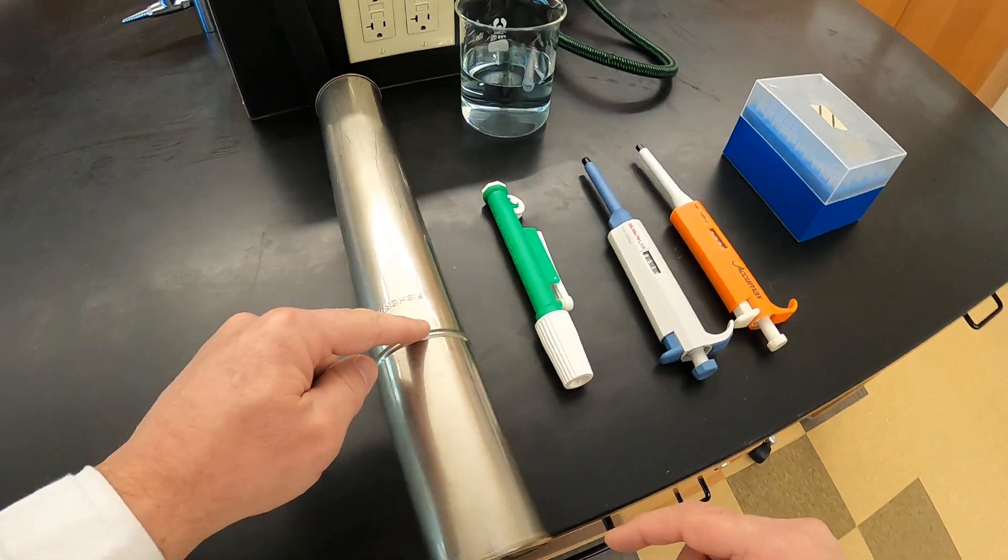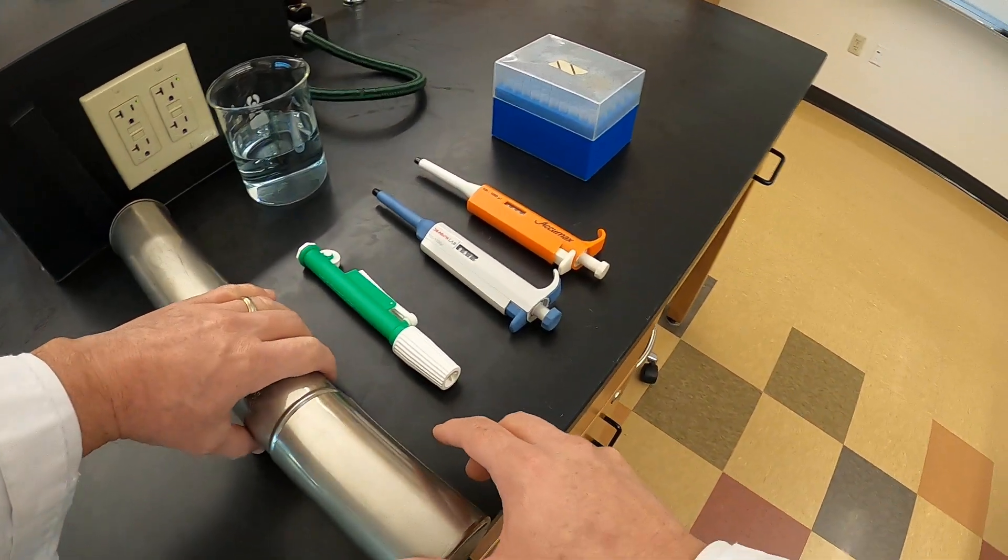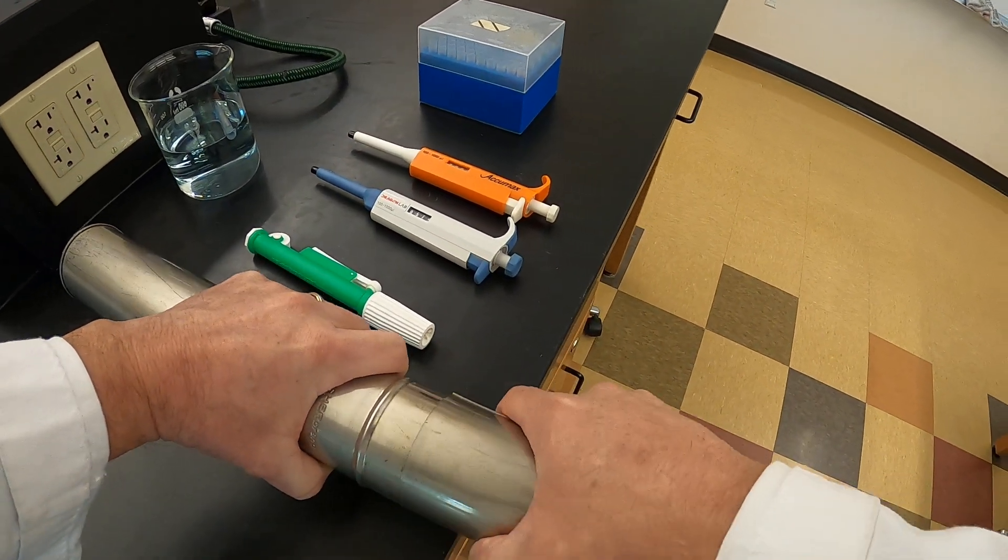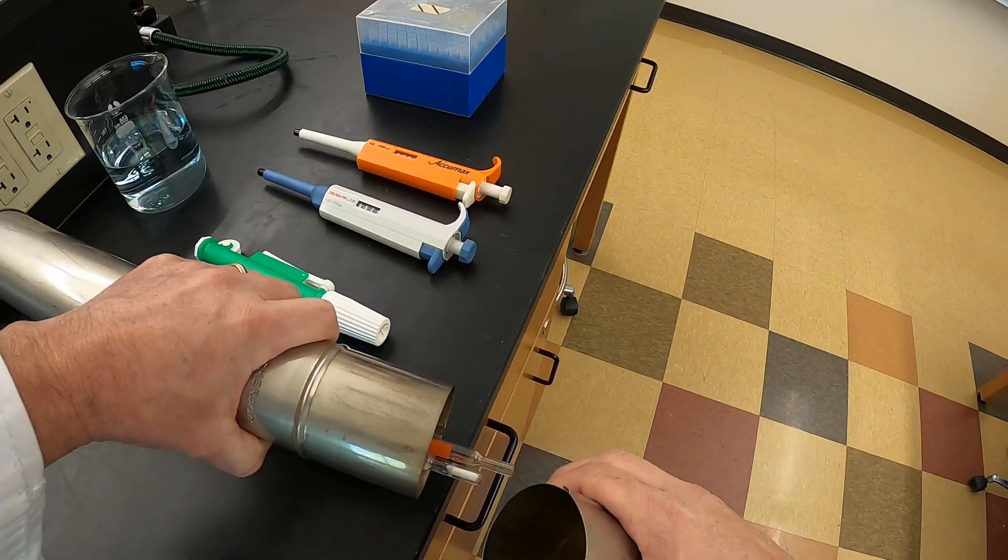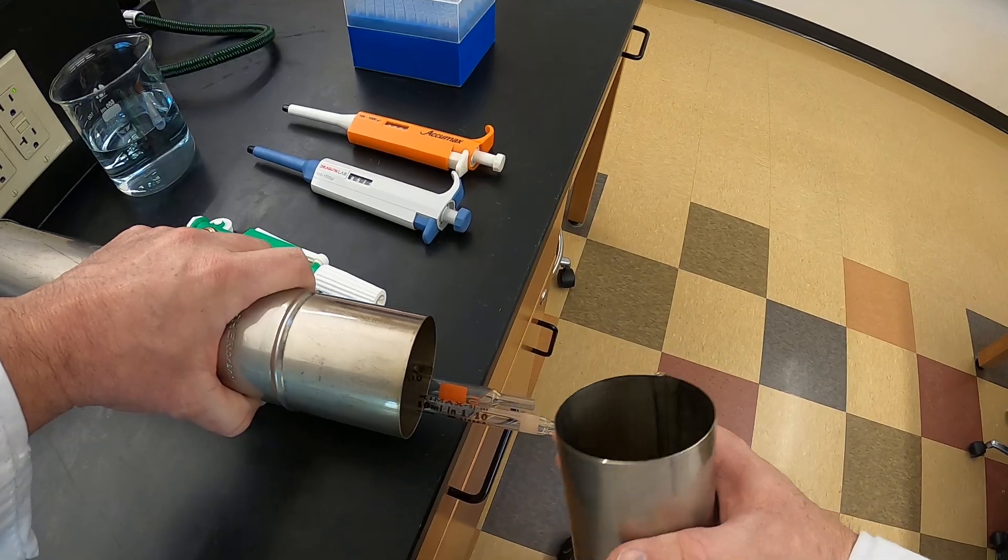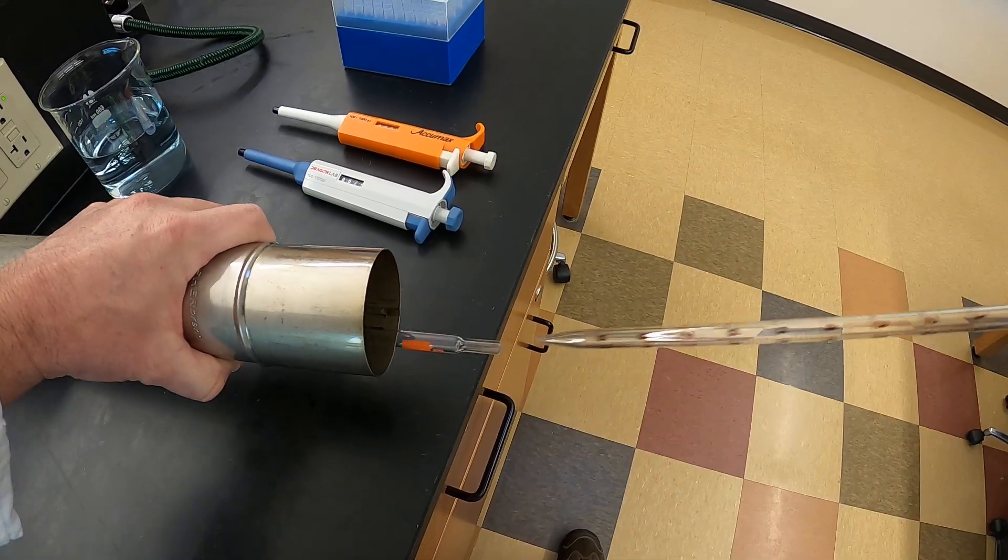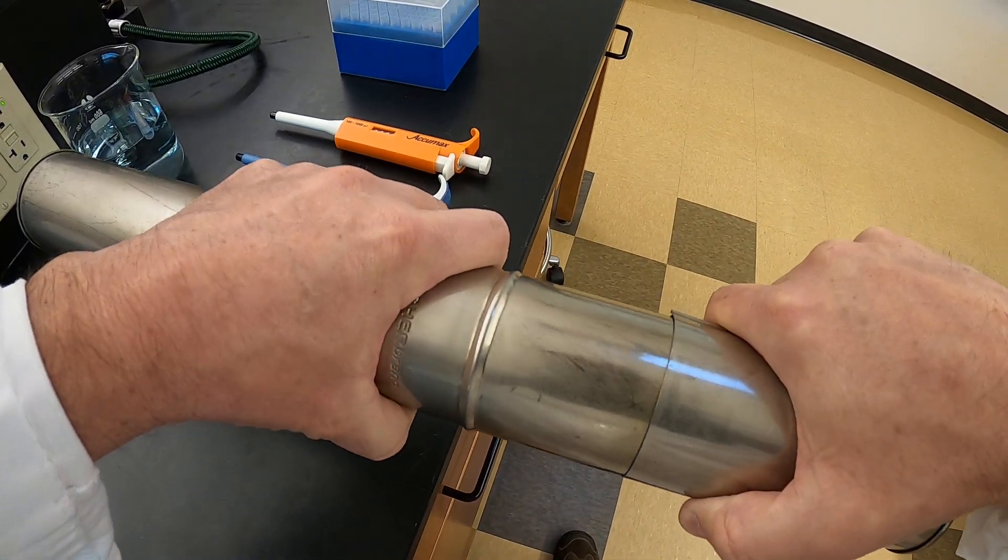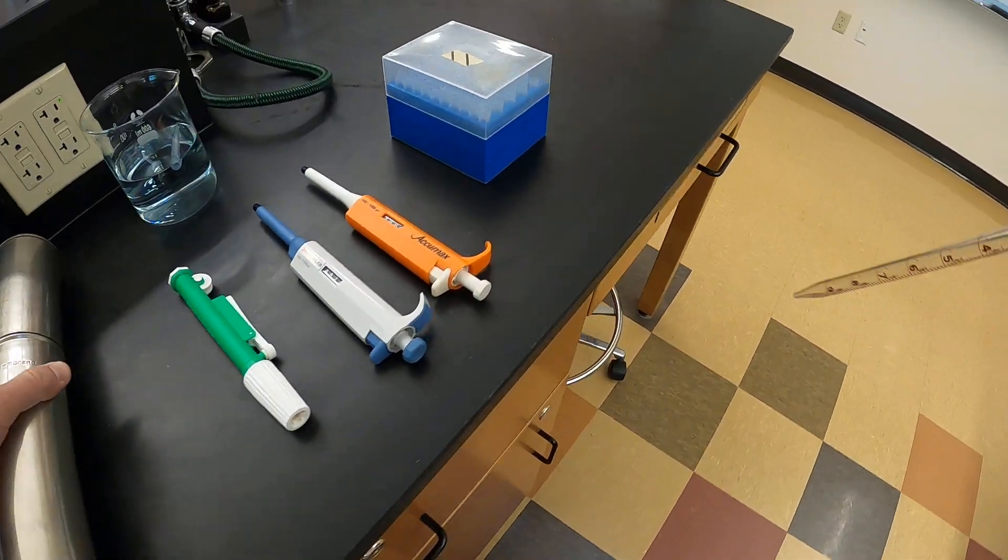We have a lid here, and the easiest way is to take the lid and take it off, and then shake the pipettes out so that they come out a little bit past the edge, and we're able to grab the tip of the pipette. We can put the lid back on and put the tube back.